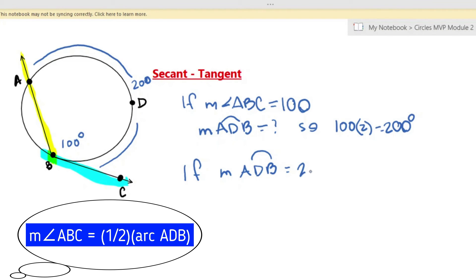Alright, let's do another one. The measure of arc ADB is 250. I want you to find the measure of the angle. Pause the video to figure this out right now.